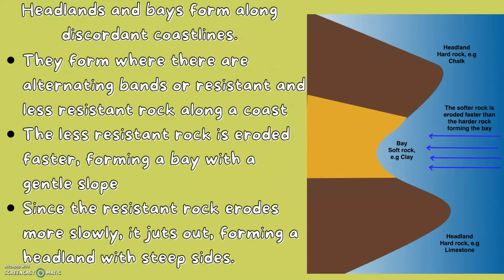Headlands and bays form along discordant coastlines. They form when there are alternating bands of resistant and less resistant rock along a coast. The less resistant rock is eroded faster, forming a bay with a gentle slope. Since the resistant rock erodes more slowly, it juts out forming a headland with steep sides.